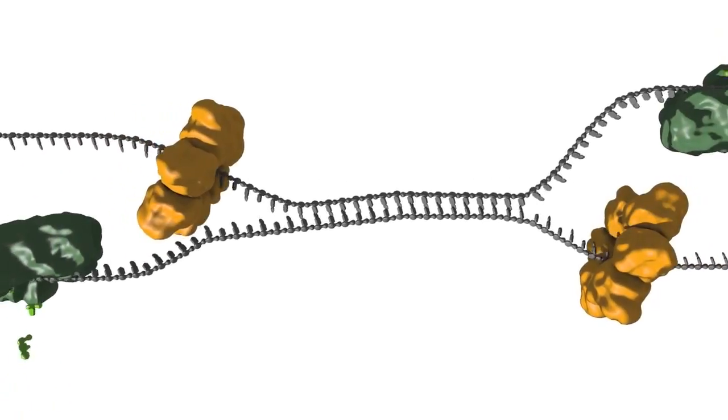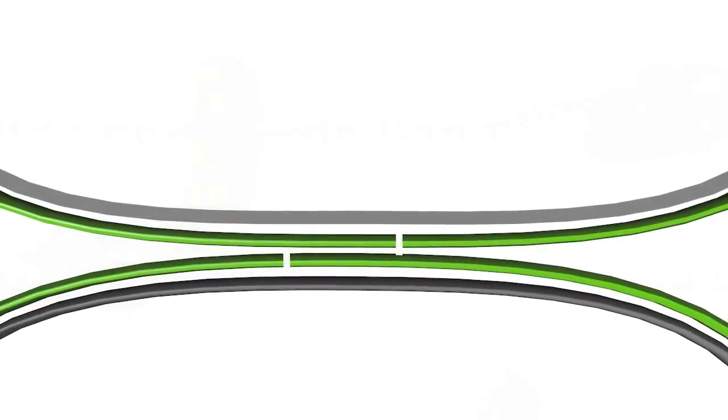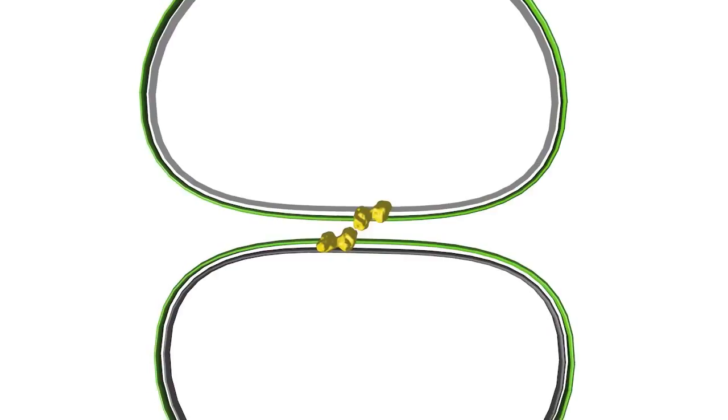Much less is known about the details of the termination of DNA replication. Once the entire chromosome is copied, the two replication forks meet each other and are dismantled. The ends of the new DNA strands are then joined, again, by DNA ligase.